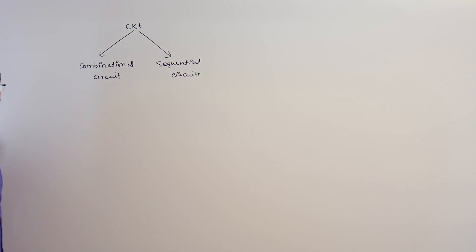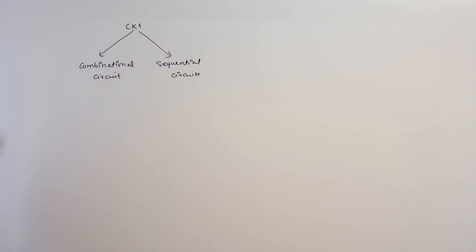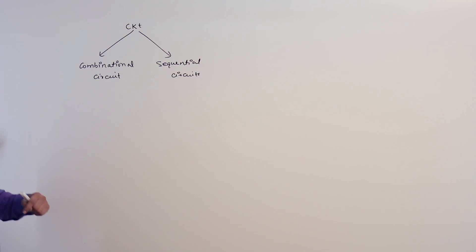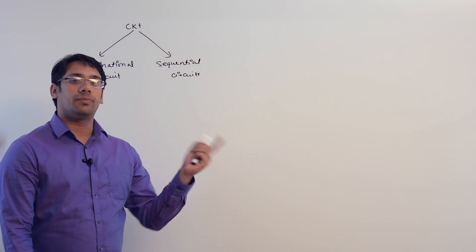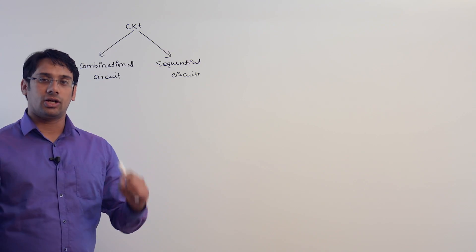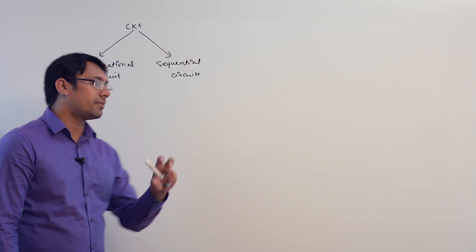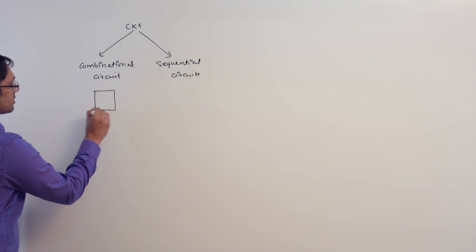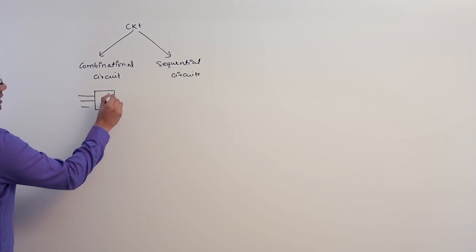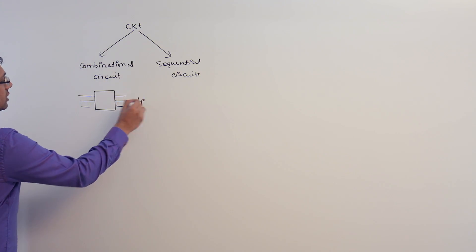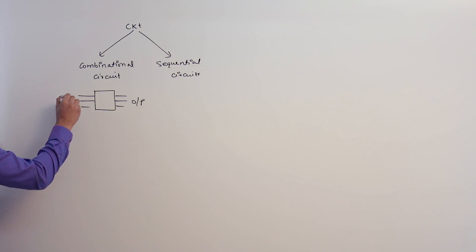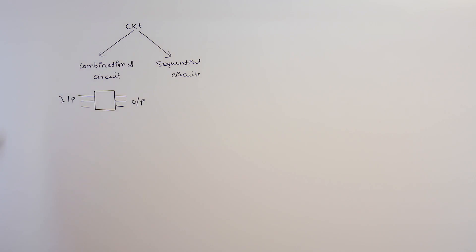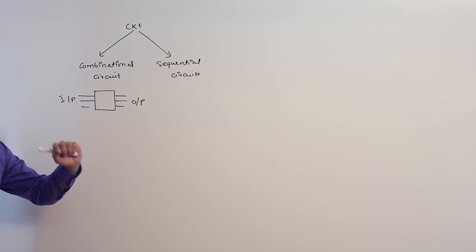What is the difference between a combinational circuit and a sequential circuit? In the combinational circuit, the current output is not dependent on the previous output. The output of the circuit is only dependent on the current input — it is not dependent on the previous input.